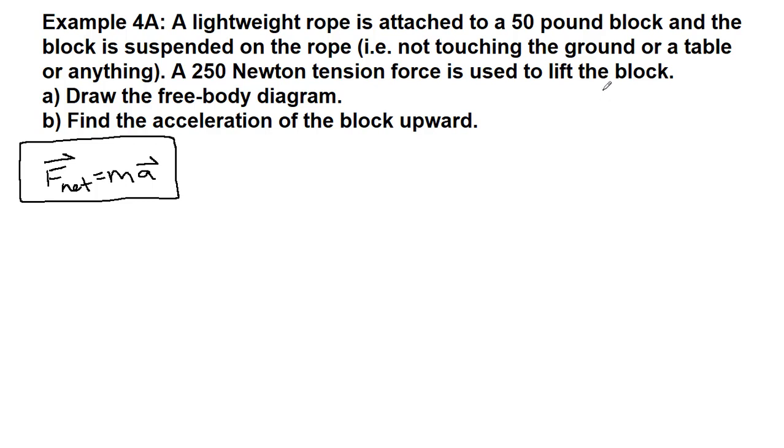Let's draw a picture. We have a lightweight rope attached to a 50-pound block. Now we always want to pay attention to units. One pound is equivalent to 4.45 newtons, and so we're going to want to turn this into newtons. But this is the weight already; it is not the mass. So that's something to be aware of as we move forward through the problem.